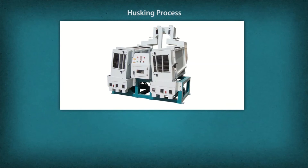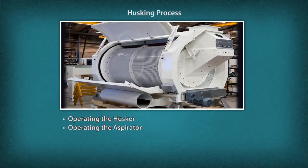Husking process. A grain mill operator performs the following tasks at the husking stage: Operating the husker to remove husk from the grain by adjusting the rollers. Operating the aspirator by controlling the speed of the aspirator fan to separate de-husked grains and remove husk.